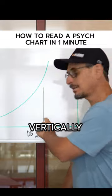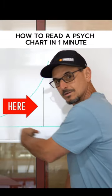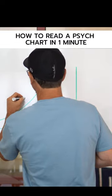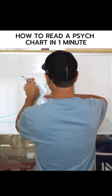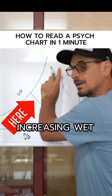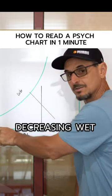Dry bulb, located vertically. Cooler. Warmer. Wet bulb travels diagonally across the chart. Increasing wet bulb. Decreasing wet bulb.